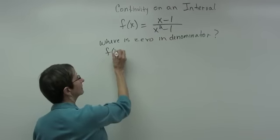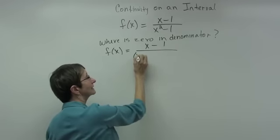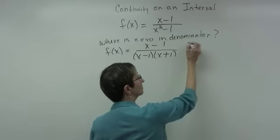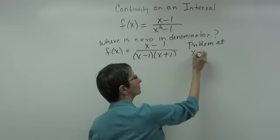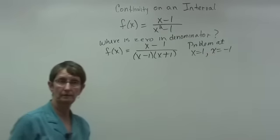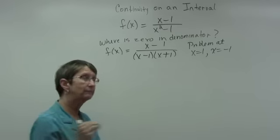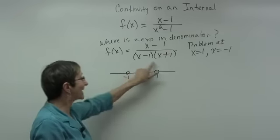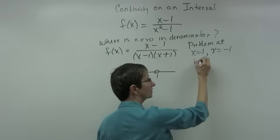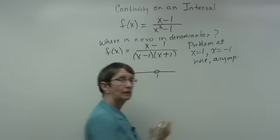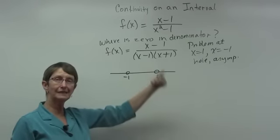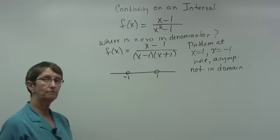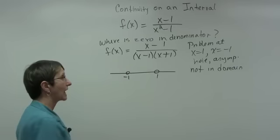I think about these on a number line. Placing negative 1 and 1 as open dots — meaning I cannot plug in those values — tells me the function is discontinuous at those two points because they are not in the domain. On the graph, there could be a hole or an asymptote there. Now let's check some intervals.